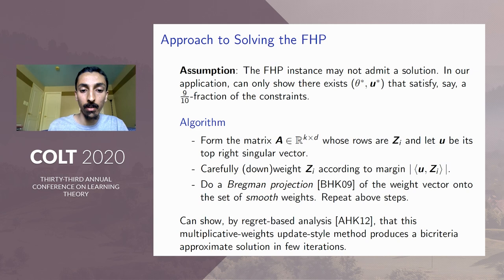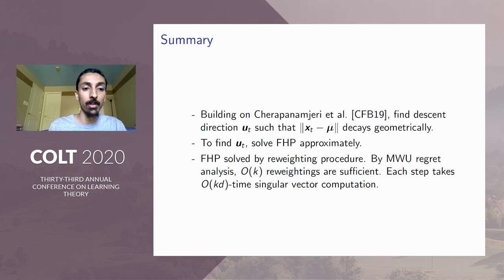So in short, the summary of this work is that we build on Cherapanam and Jerry et al.'s algorithm by searching for descent directions. To find these descent directions, we solve this simpler furthest hyperplane problem in a bi-criteria sense. And we solve it by some simple multiplicative weights update procedure. We can use a regret-based analysis to show that we need a small number of reweighting iterations. And each iteration only takes order k·d time, because we just require computation of a top eigenvector.